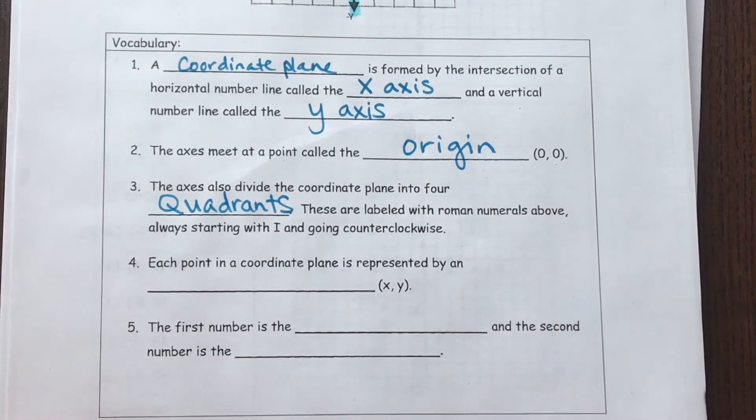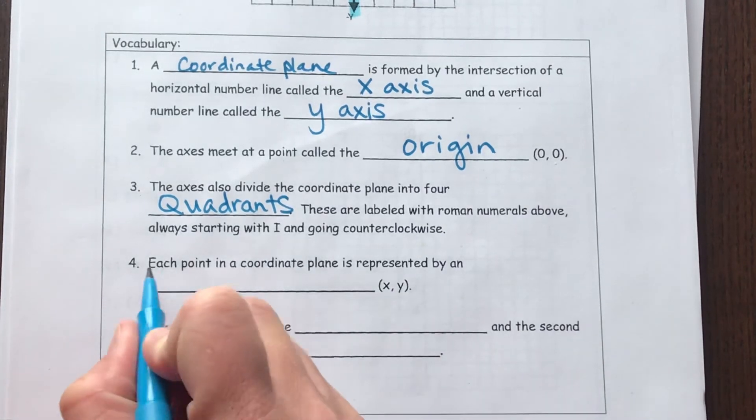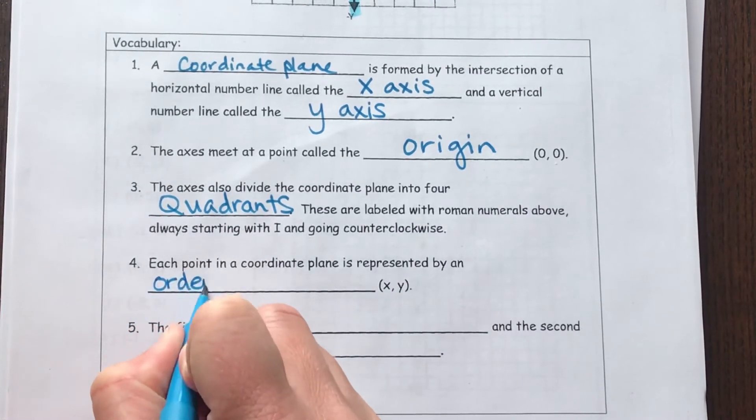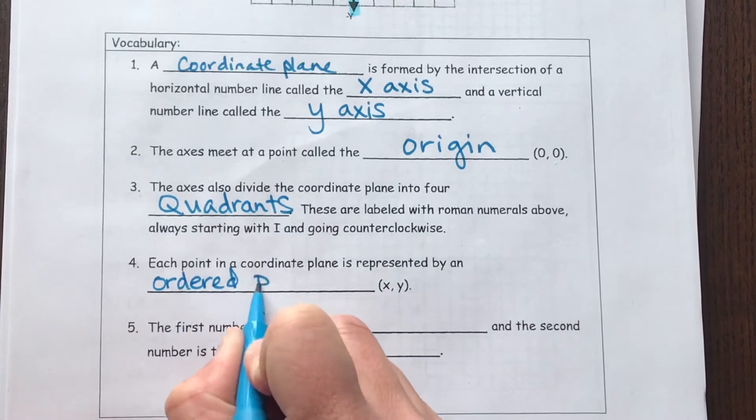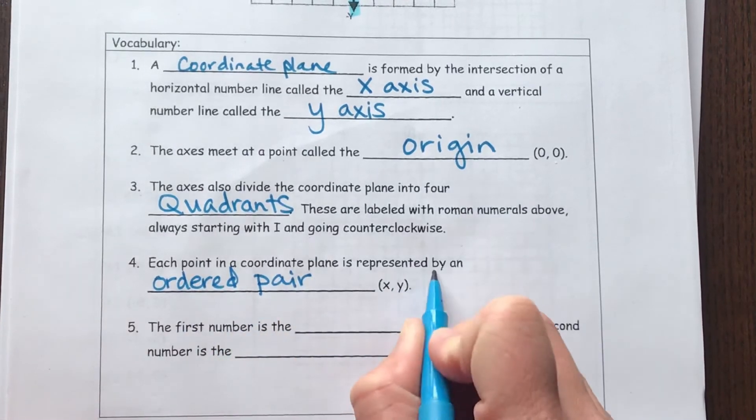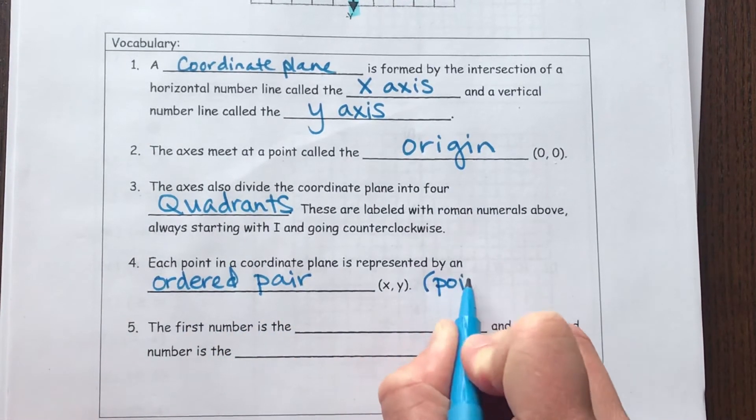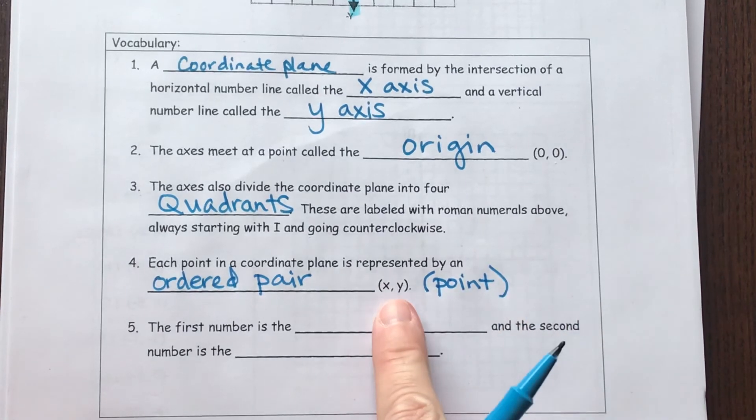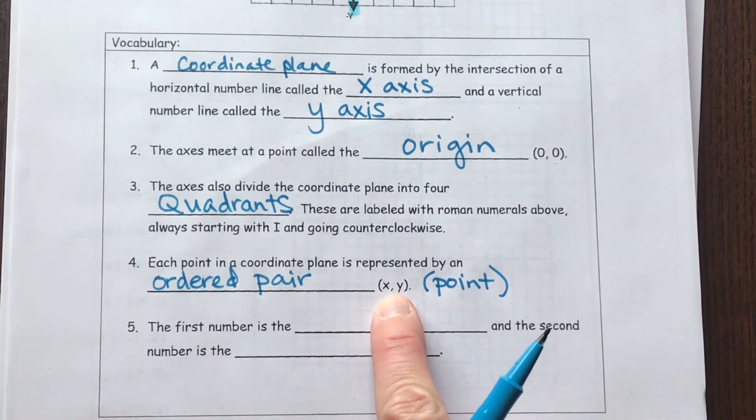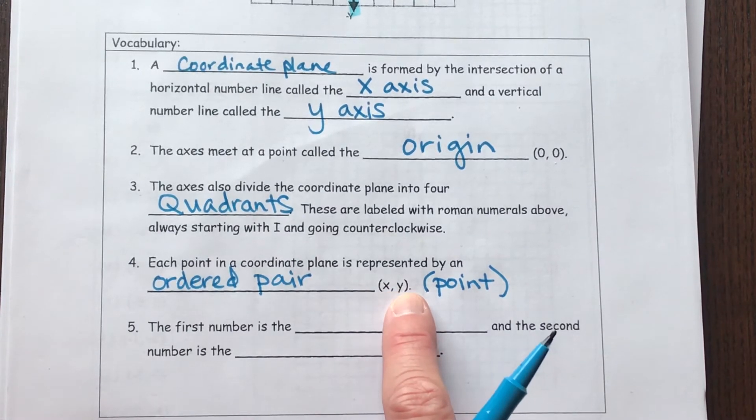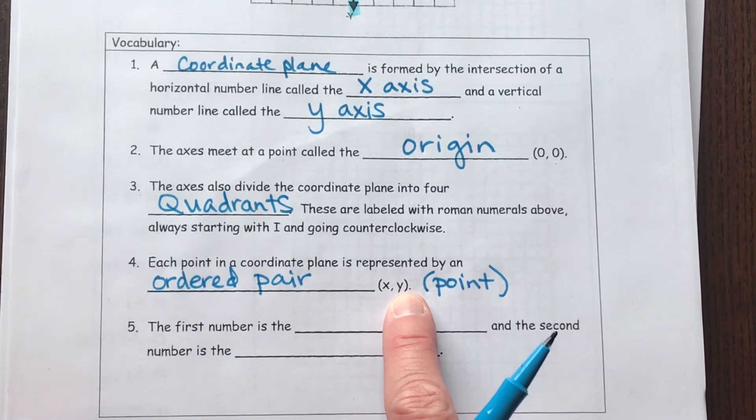Each point in a coordinate plane is represented by what is called an ordered pair. You could also call this a point. And the point needs to be represented by an X. So if it's positive or negative, that will tell you which direction to go for the X, and then a Y value, which is also positive or negative, and that will tell you which direction to go as well.